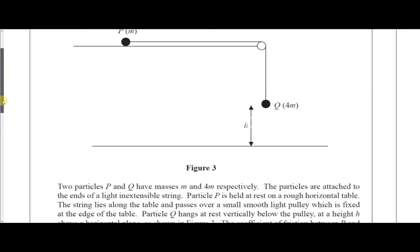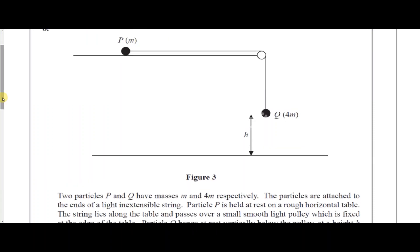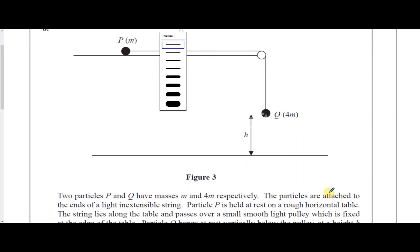Here we have two particles, P and Q, with masses M and 4M respectively. The particles are attached to the ends of a light, inextensible string. Particle P is held at rest on a rough horizontal table. One of the key words there is 'rough', meaning there's going to be friction involved.